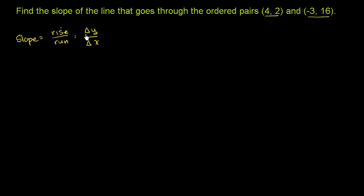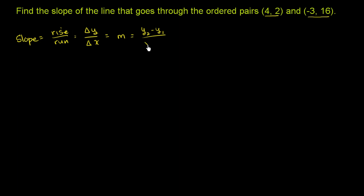The triangle symbol here is the delta symbol — it literally means 'change in.' Sometimes slope will be specified with the variable m. And they'll say that m is the same thing as change in y, written as y2 minus y1 over x2 minus x1.